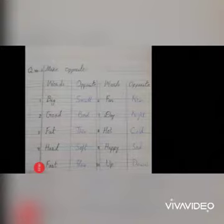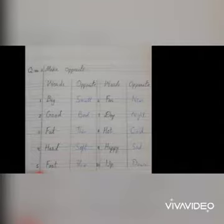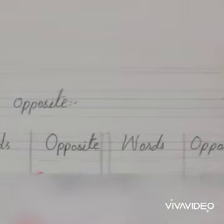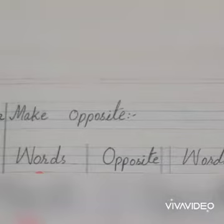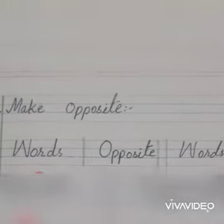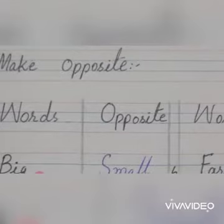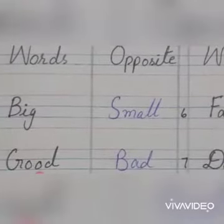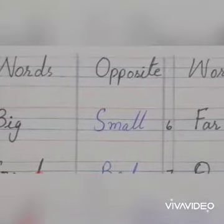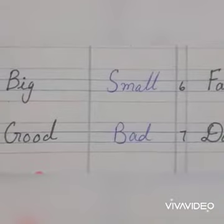Assalamu alaikum students. In the last video we wrote singular and plural. Now today we will do opposite words — question number two: make opposite words. Number one: big (bada) — small (chota). Number two: good (acha) — bad (bura).